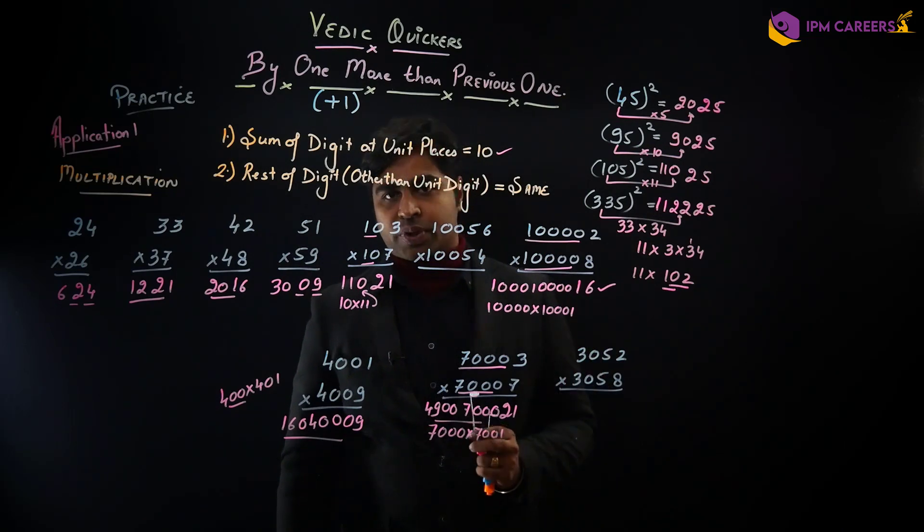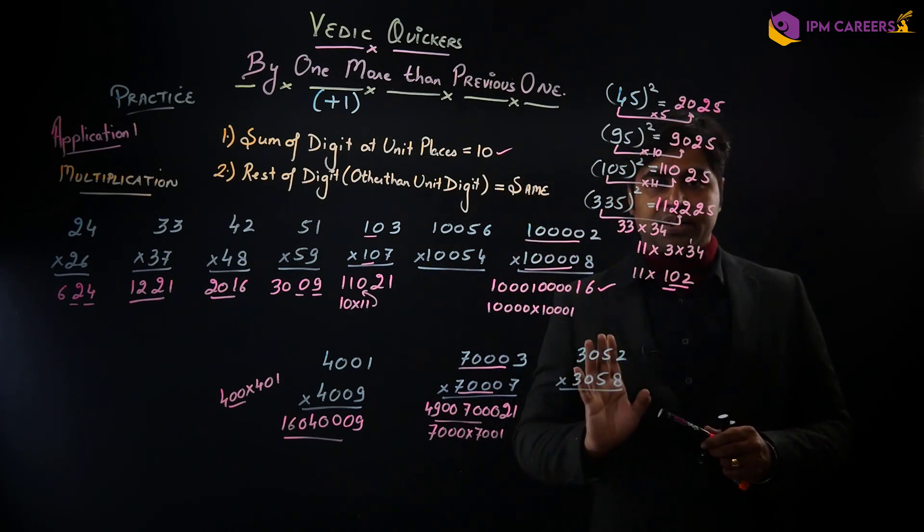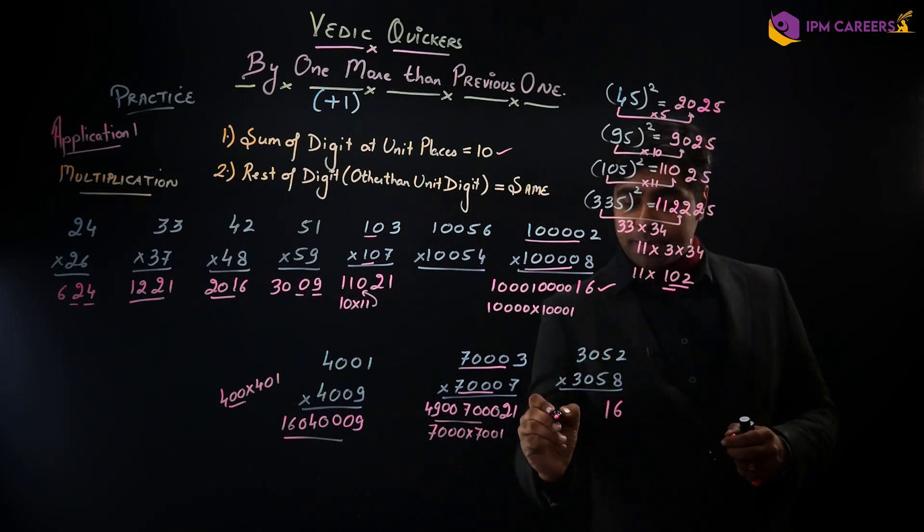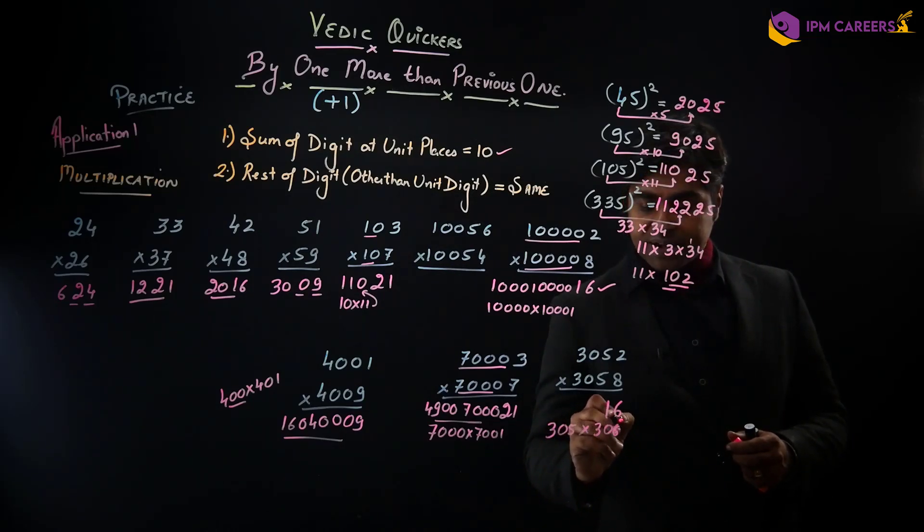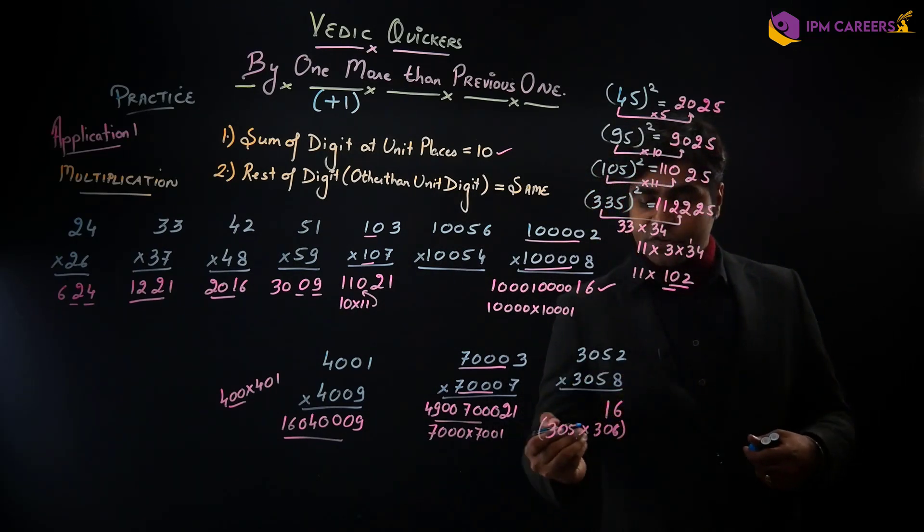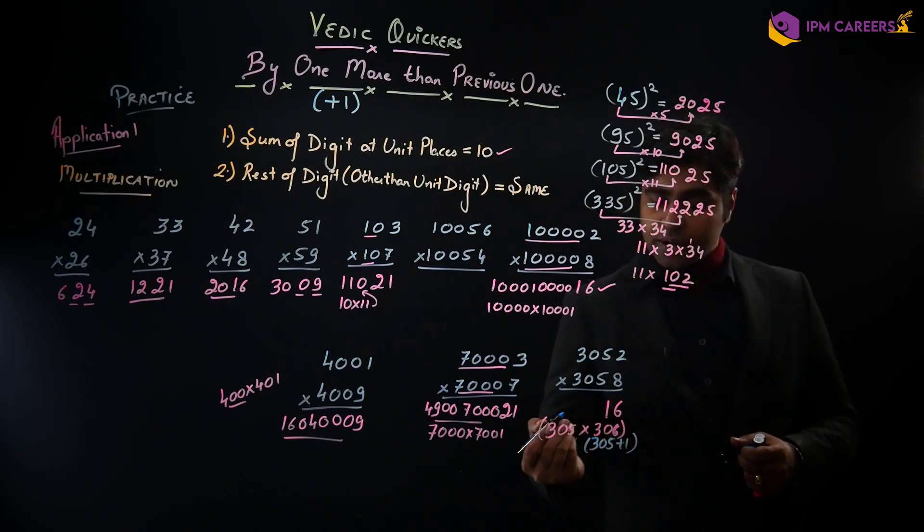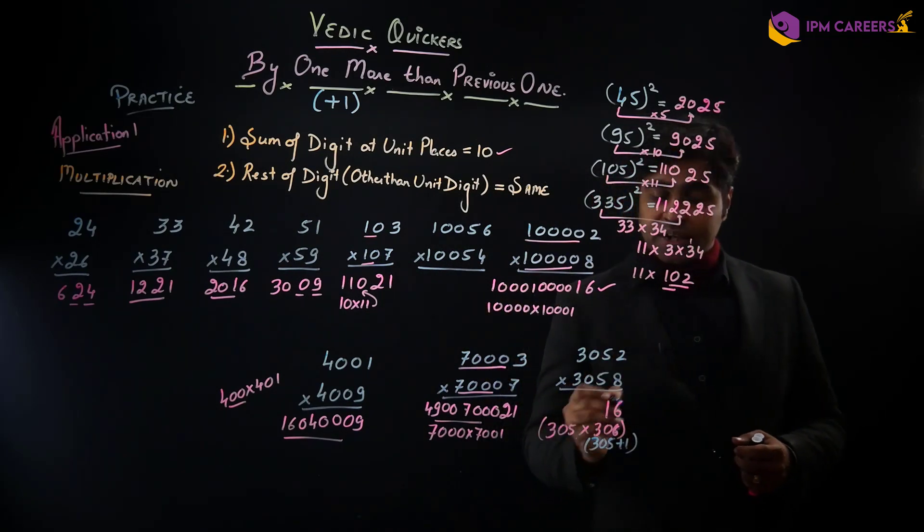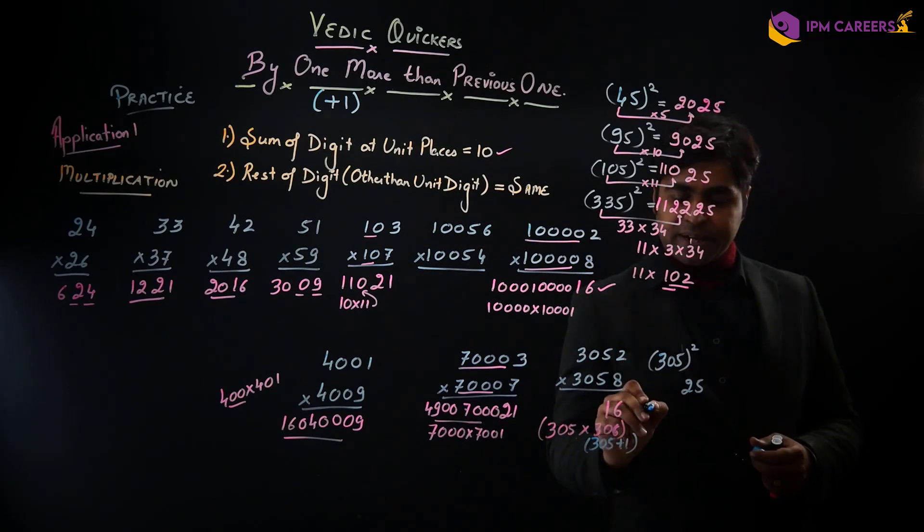1 likho, 2 likho, matlab extreme numbers likhi hain. Phir karne ka tarika, pichli se shuru karke 2, 2 ka summation ka multiplication with the next number which is 306, 3, 0, 6. Thik hai, so yaha pe hum kya rule apply kar sakte hain. Yaha pe koi special rule toh humhare paas nahi hai, lekin aise situation mein hum kya bol sakte hain ki 305 ka square karu, kyunki 306 can be written as 305 plus 1.